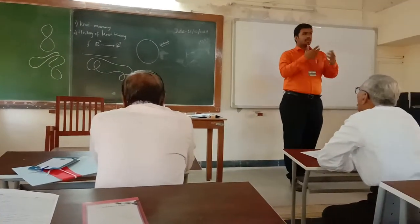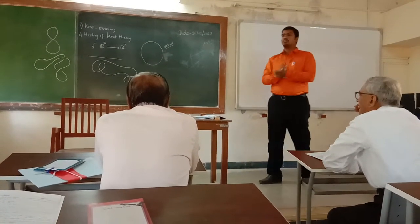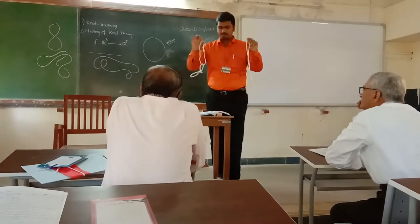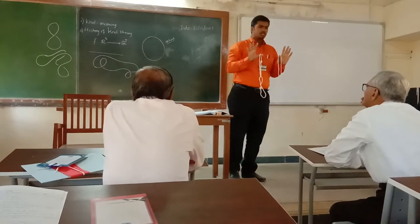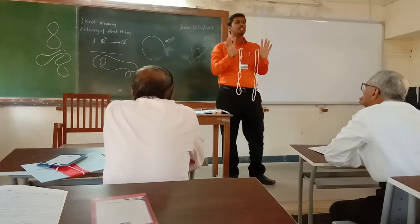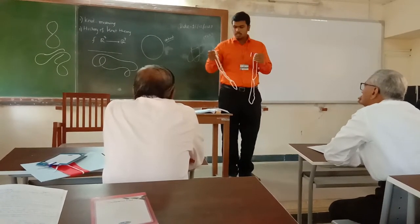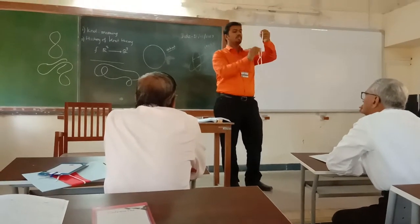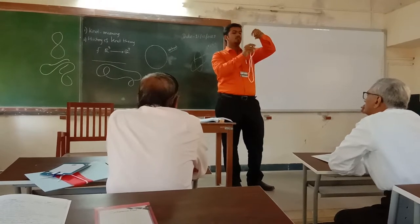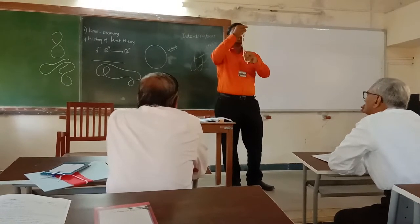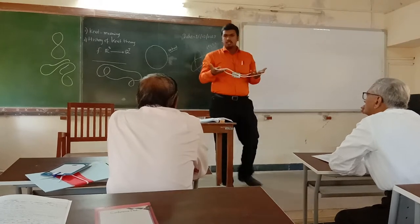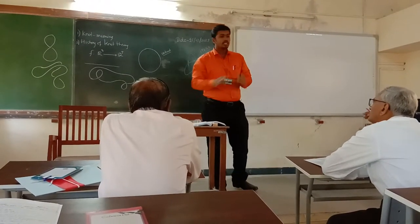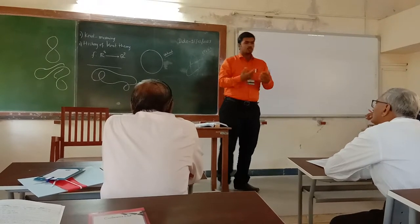Now the obvious question is, knots can have different shapes, but when are two knots equivalent? Suppose I have these two knots here. Are these two knots equivalent? This question is obvious. One thing is we need one knot. So the question is, we need to make a knot that is not a knot. And if there are complex knots, we can simplify these knots and match them.